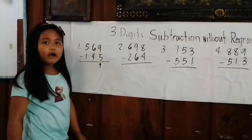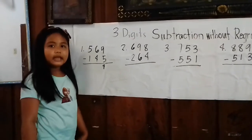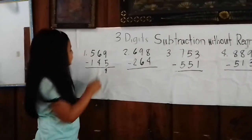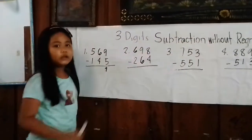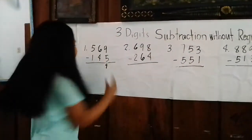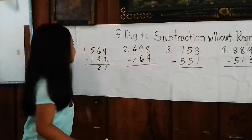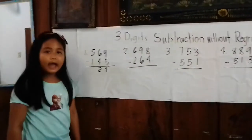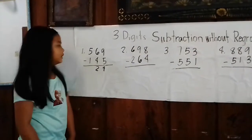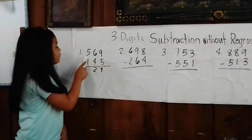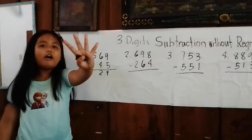Now we will subtract the tens place. 6 minus 4 equals 2. Now we will subtract the hundreds. 4 minus 1 equals 3.